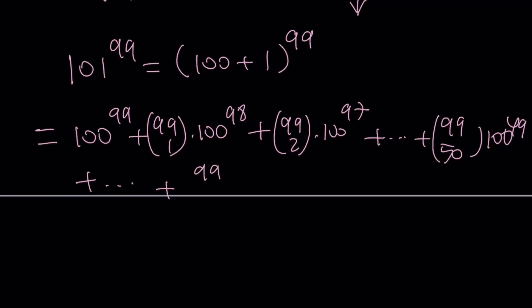And then we're going to have 99 choose 98 times 100. And finally, we're going to have 99 choose 99, which is actually 1. That is going to be the expression.